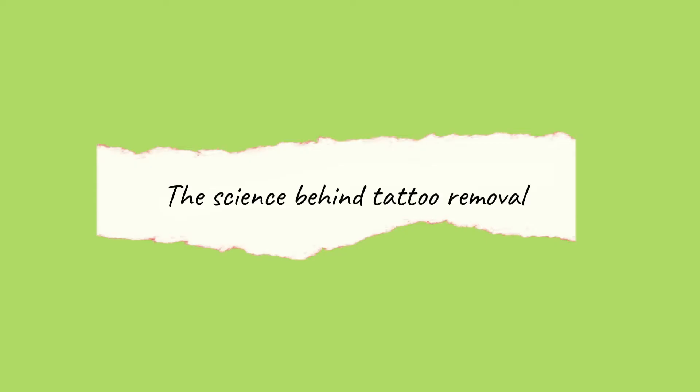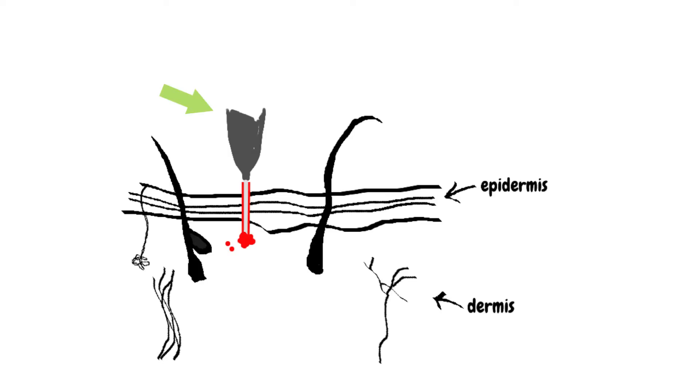To answer this question, there is a need to understand the origins of a tattoo. What exactly happens during the tattooing process? The tattoo machine punctures the skin at a rate of 50 to 3000 times per minute and deposits tattoo ink into the dermis layer of the skin. The needle piercings trigger an inflammatory process at the location.